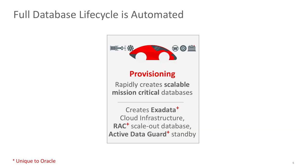Let's look at six key elements in the life cycle of a database and see how the Autonomous Database automates each of those elements. Autonomous Database allows us to provision a mission-critical database on a cluster of Exadata machines in a few minutes.